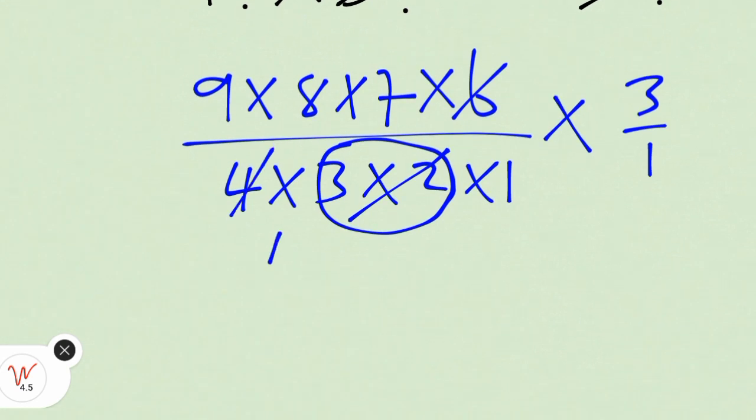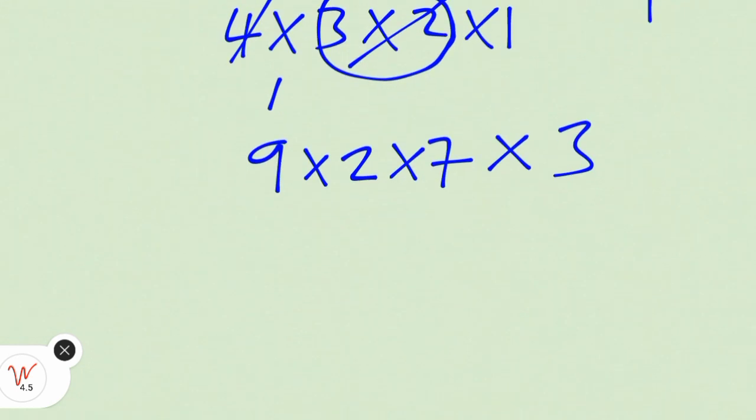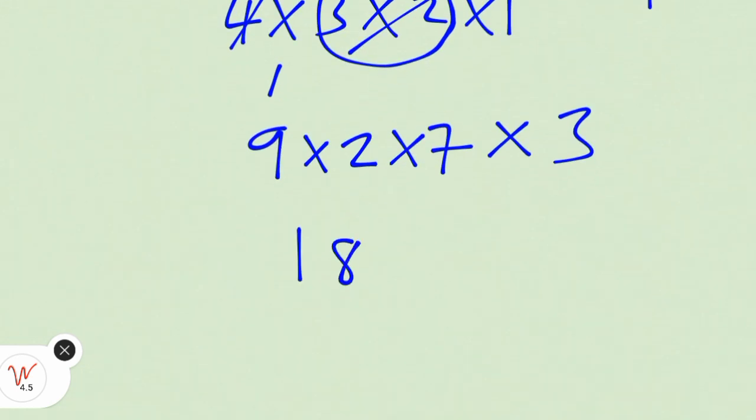Four goes into four one, four goes into eight two. Therefore, we have nine times two times seven times three. Nine times two is eighteen times seven times three is twenty-one.